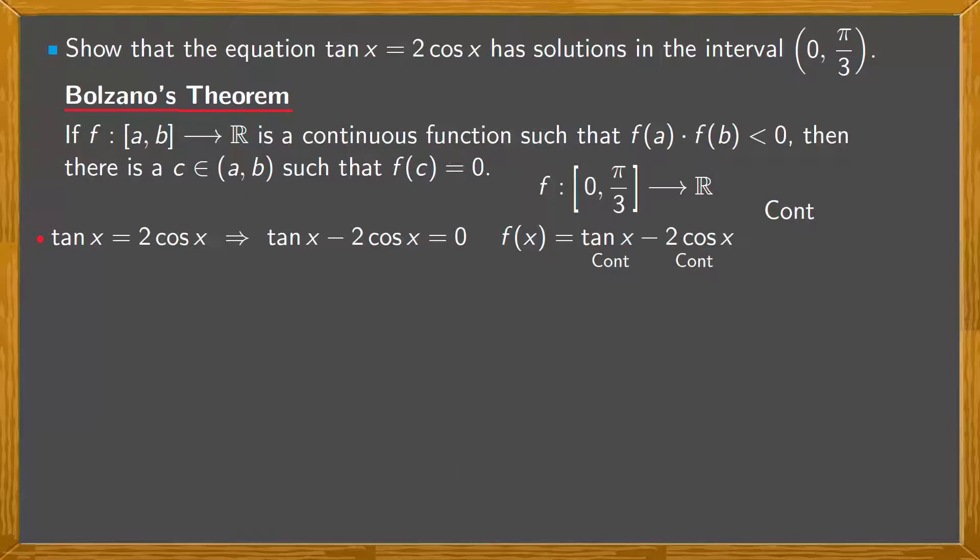Now we'll calculate the images of f at the ends of the interval. For f(0), we substitute 0 for x in f, so that we have tan 0 minus 2 times cos 0. Well, tan 0 is 0. Cos 0 is 1, which is minus 2.